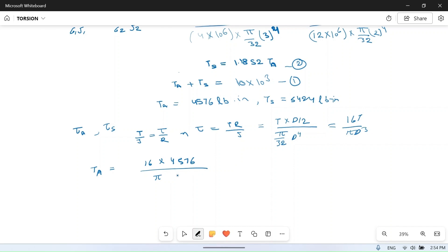shear stress in steel equals 16 × T_steel (5424) / (π × d^3) where d = 2, which equals 16 × 5424 / (π × 2^3) = 3450 psi. This is the maximum shear stress in steel and aluminum respectively.